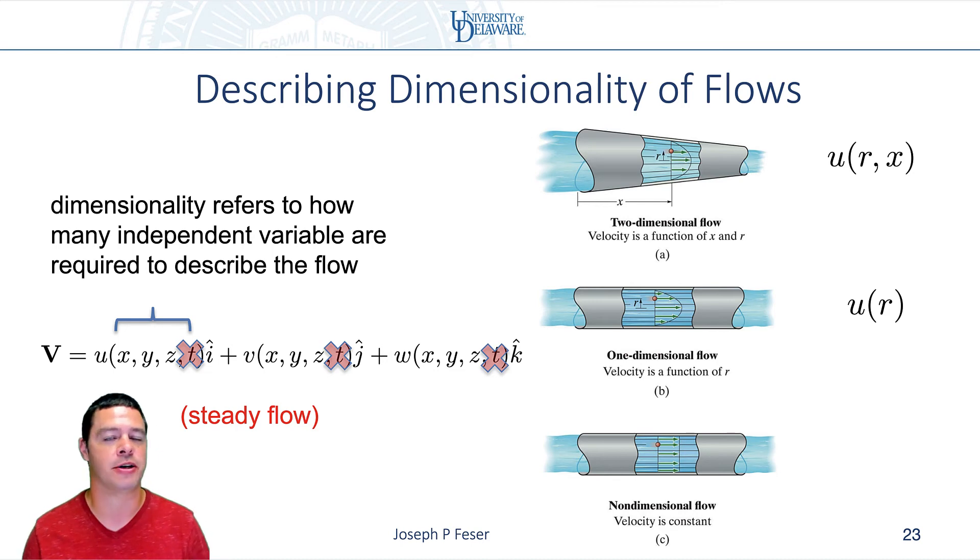And then the book talks about something called a non-dimensional flow where the velocity is constant. Basically what they mean, this is actually an approximation. This is never actually true, but it's often approximately true that the velocity profile is uniform across a pipe.